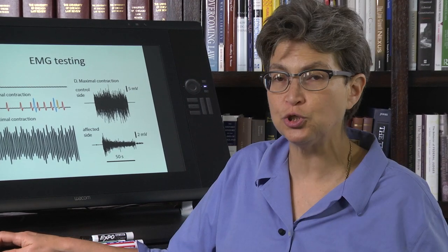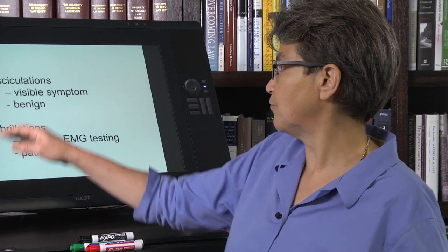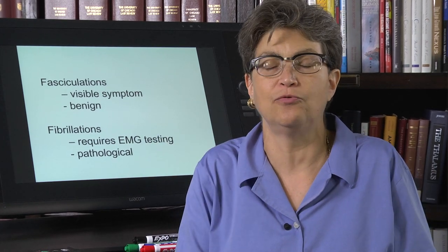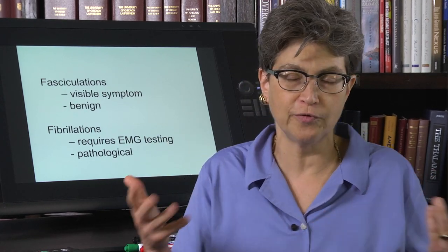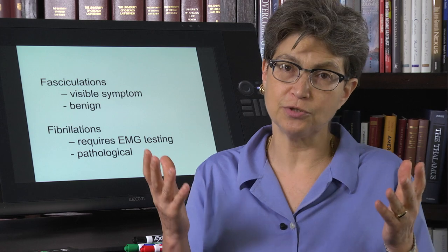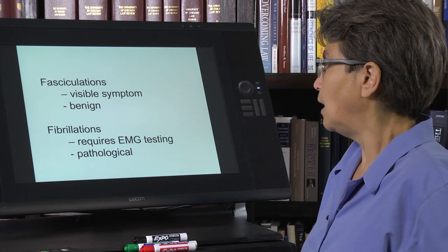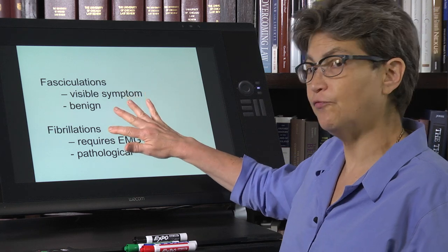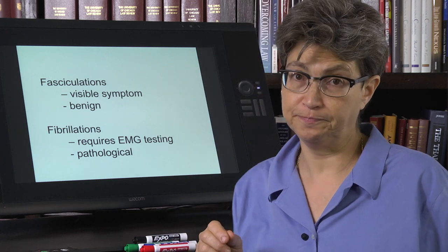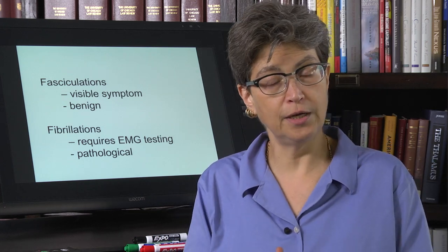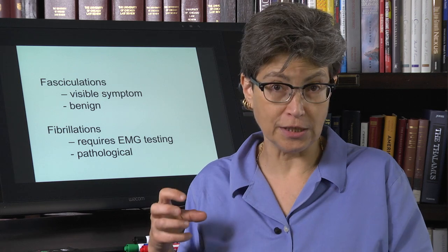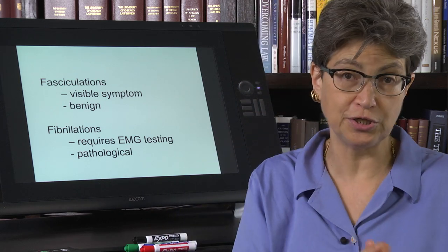So fasciculation, the vast majority of fasciculations are benign. They're visible and they're benign. So there is a benign fasciculation syndrome. Everybody, I can't think of too many people I know over the age of even 20 that don't have a muscle twitch here or there. So there's a benign fasciculation syndrome. Now, on the other hand, fibrillations are pathological. They are a sign of denervation. They are only going to occur in a muscle where motor neurons have died. And there is a loss of the motor neuron innervation of the muscle.